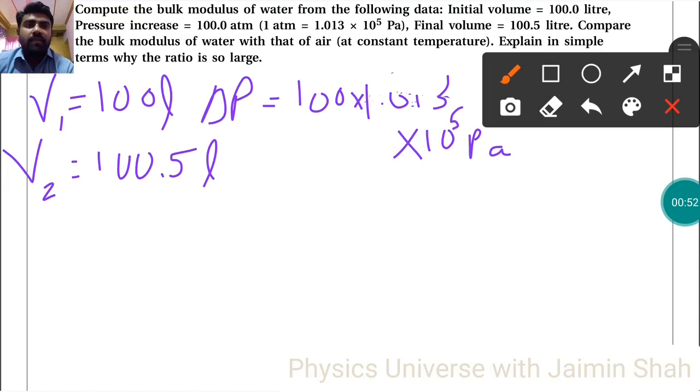Now compare the bulk modulus of water with that of air. The bulk modulus formula is B equals minus delta P upon delta V upon V, where V is the original volume V1.